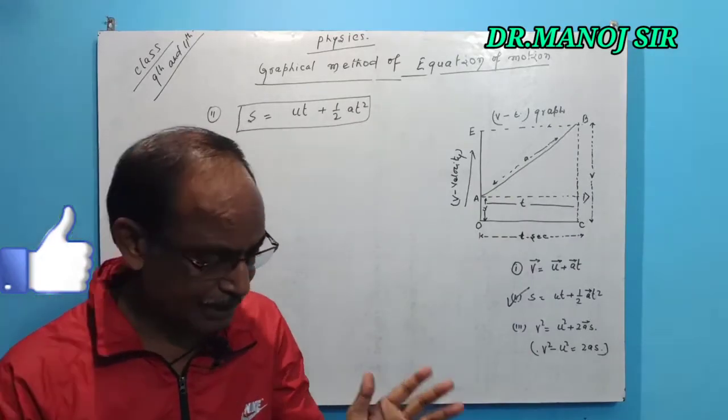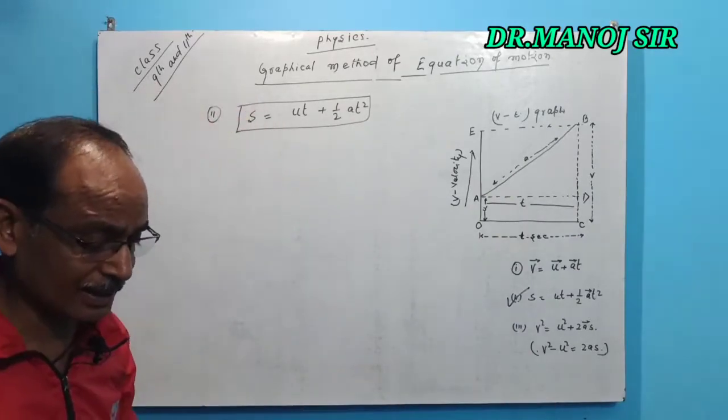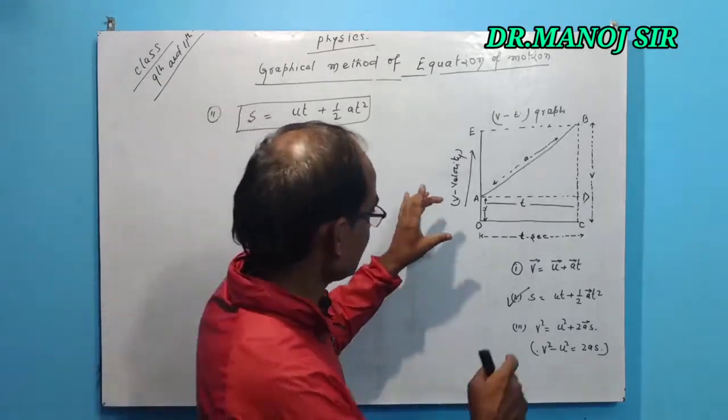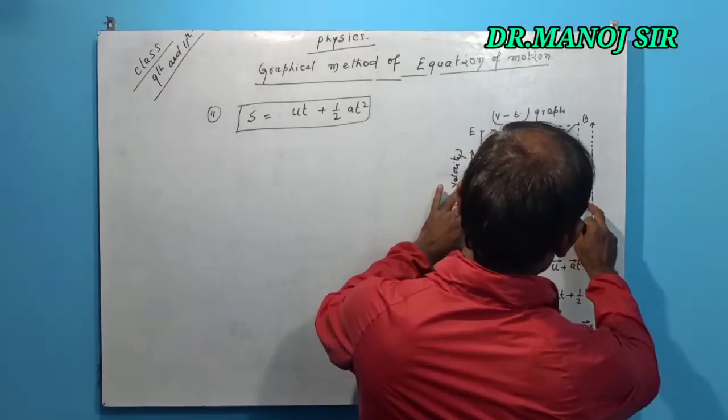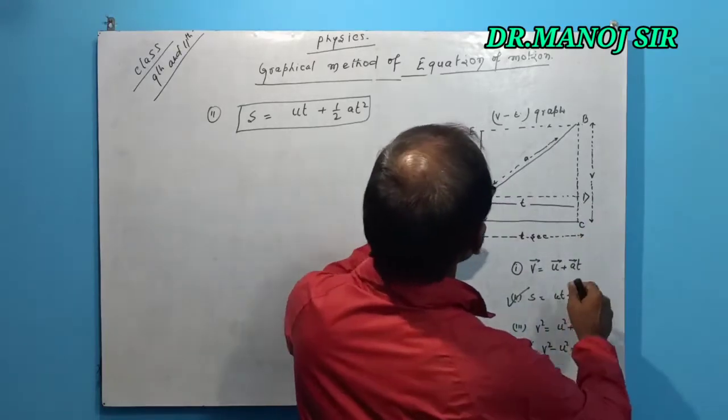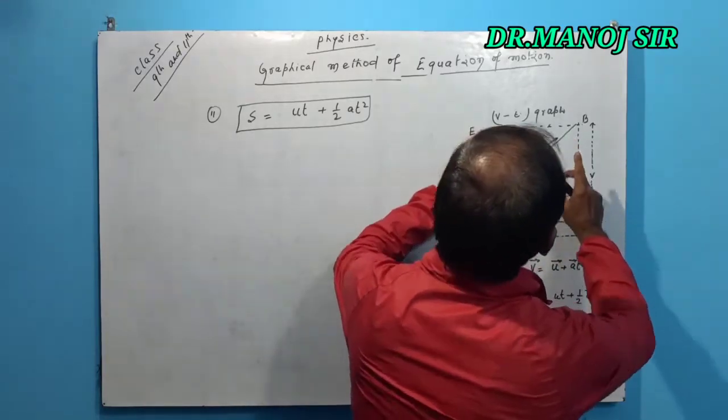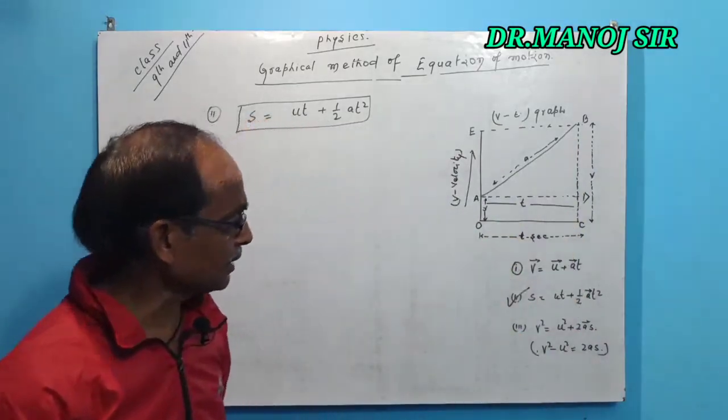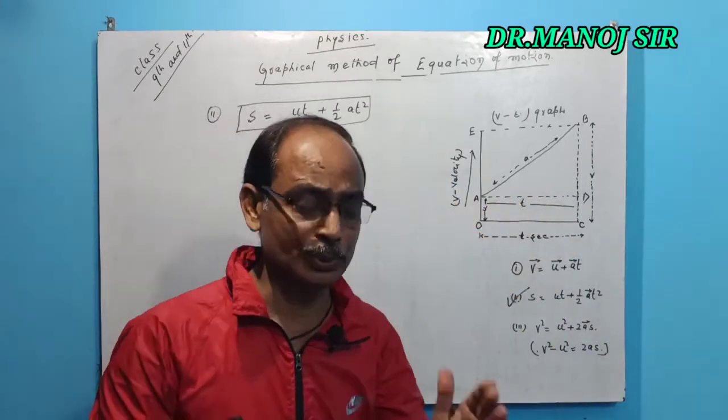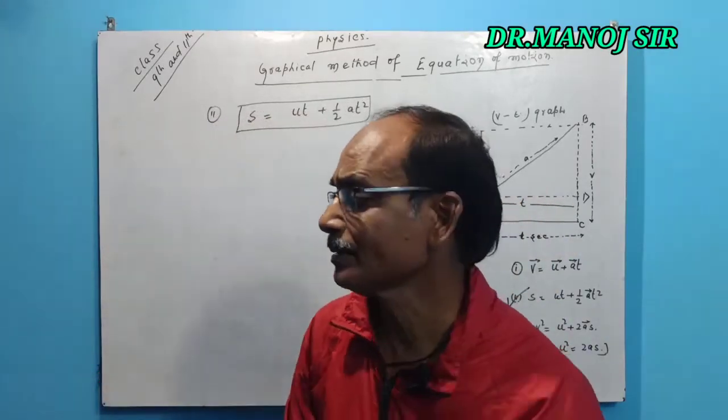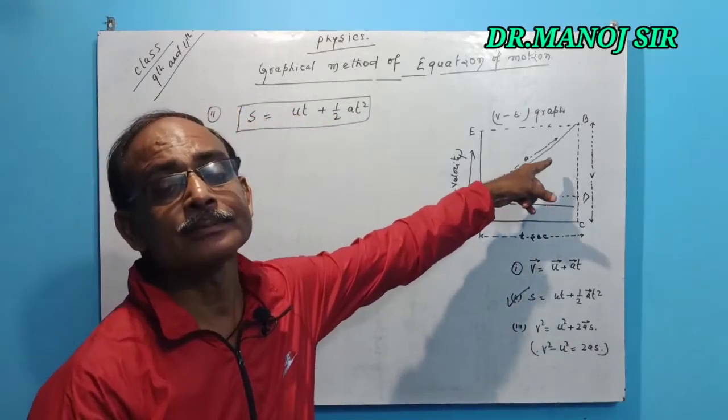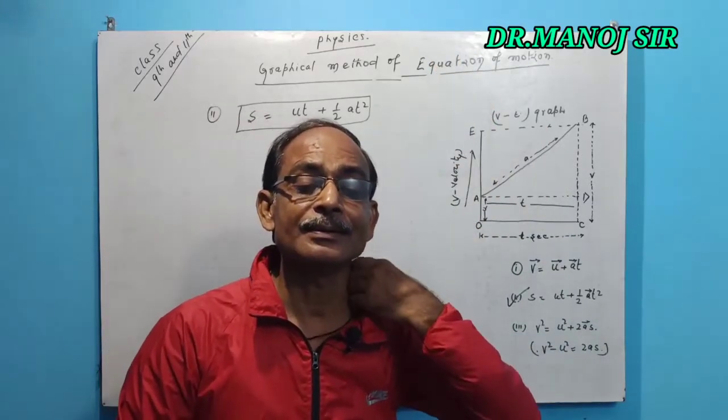As you know, trapezium is the combination of a rectangle and a right angle triangle. Here, O A D C is the rectangular graph, where A B D is the right angle triangle graph. The trapezium is the combination of two graphical structures as a rectangle and the right angle triangle graph.